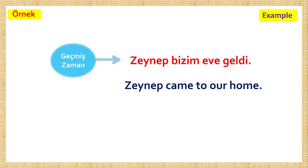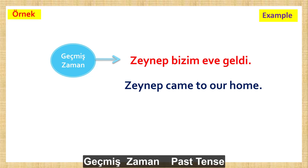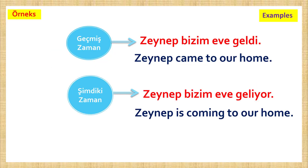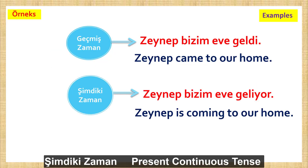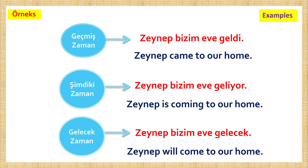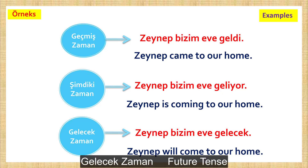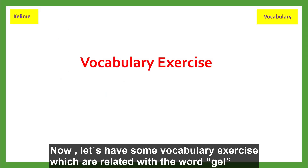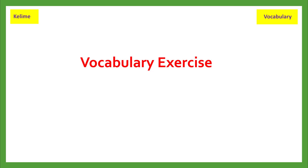Zeynep bizim eve geldi — Geçmiş zaman — Past tense: Zeynep came to our home. Zeynep bizim eve geliyor — Şimdiki zaman — Present continuous tense: Zeynep is coming to our home. Zeynep bizim eve gelecek — Gelecek zaman — Future tense: Zeynep will come to our home. Now let's have some vocabulary exercise related to the word gel.